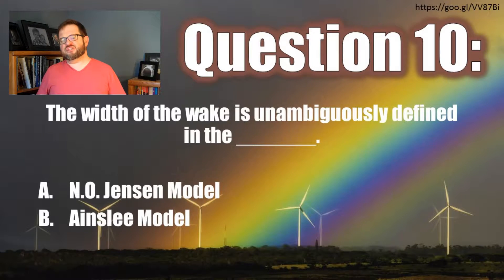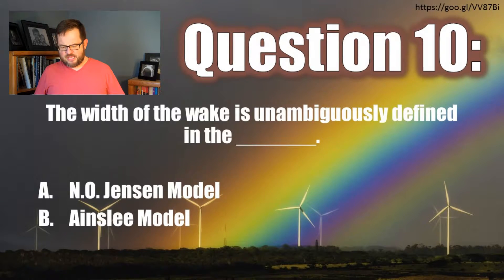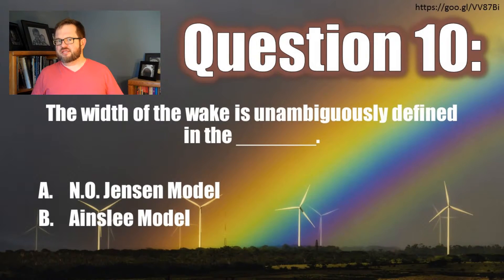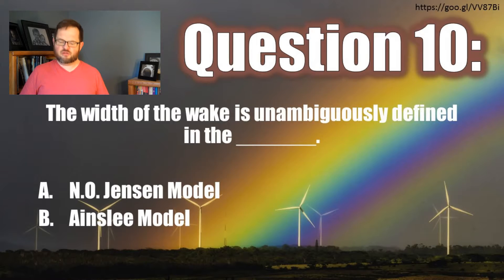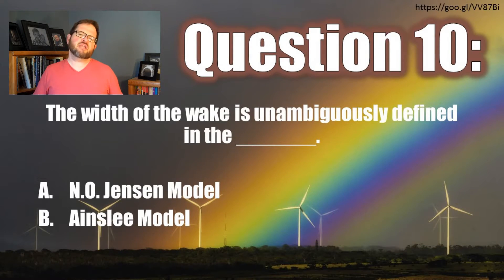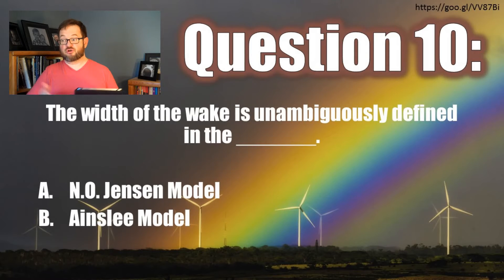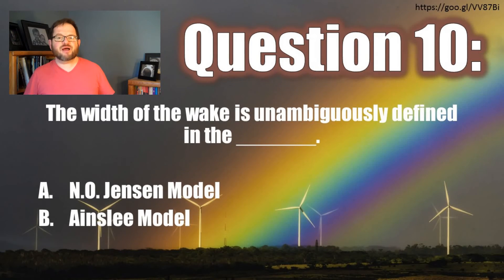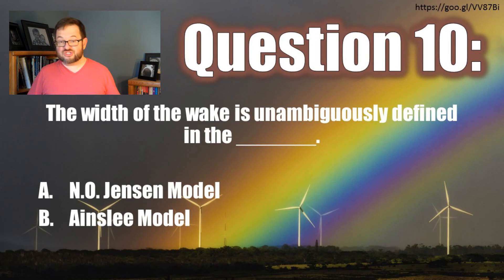Let's talk about the properties of these two different models of a wake. Question 10: the width of a wake is unambiguously defined in the Ano-Jensen model or the Ainsley model. Which one has a very clear definition of what is the edge of the wake, or the width of the wake? Make a choice for your two options and get a little feedback before you move on to Question 11.